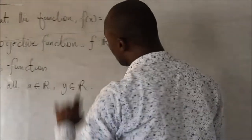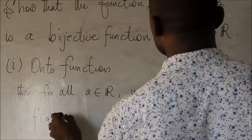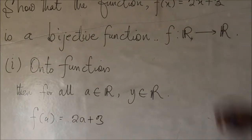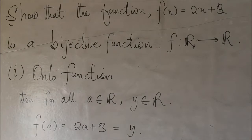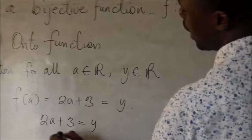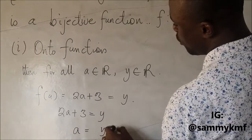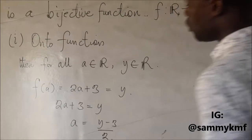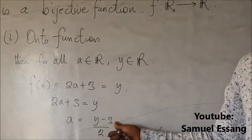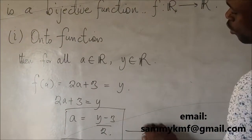So, how do we do that? We simply have F of a to be equal to 2a plus 3. Simply substitute here and equate this to y. At the end of the day, you have that 2a plus 3 is equal to y. And you can simply have that a will be equal to y minus 3 over 2. So, you can see, this is very interesting, that for every a, there is also going to be a y here. So, by this, we have shown that the function is what? Onto.